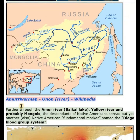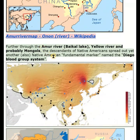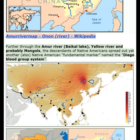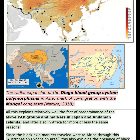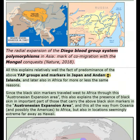Further, through the Amur River, Baikal Lake, Yellow River, and probably Mongols, the descendants of Native Americans spread out yet another Native American fundamental marker named the Diego Blood Group System. The radial expansion of the Diego Blood Group System polymorphisms in Asia is marked as co-migration with the Mongol conquests (Nature, 2018). All this explains relatively well the predominance of the above YAP groups and markers in Japan and Andaman Islands, and later also in Africa for more or less the same reasons.